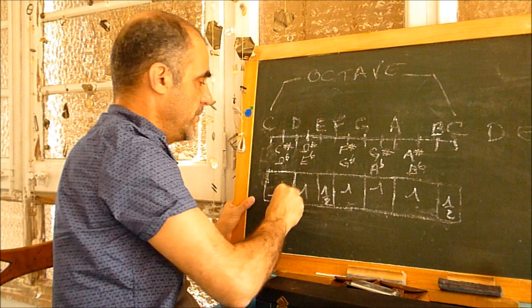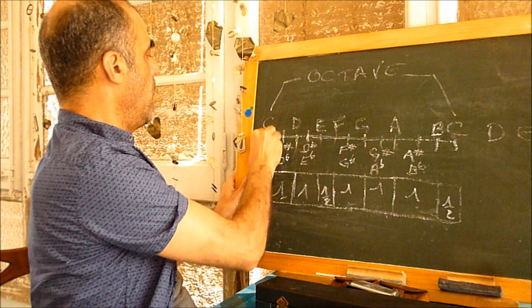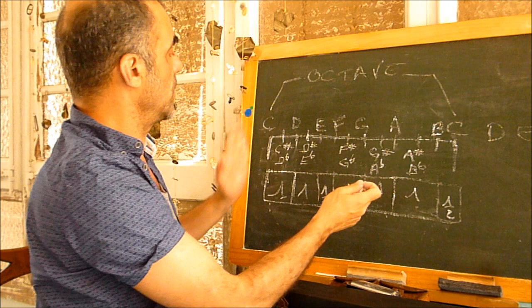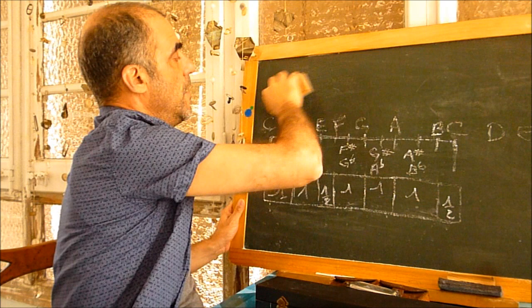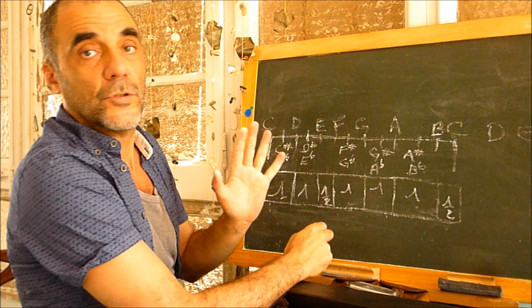For now we keep going with this. So we have the structure of the major scale and we know all the names of all the notes in one octave. Now, how can we create the major scale of D?